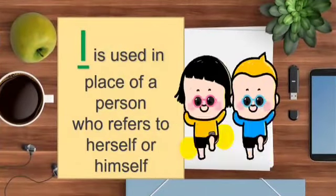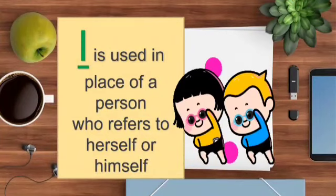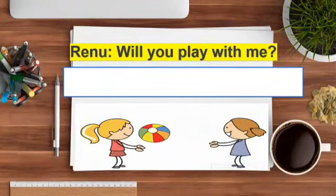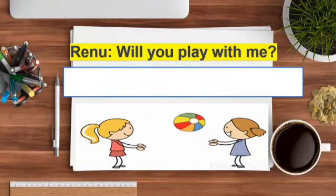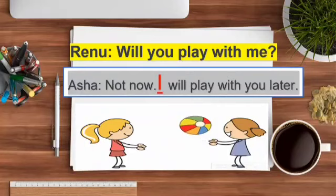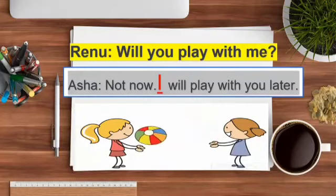Now, next is I. I is used in place of a person who referred to himself or herself. Children, when a person is talking about himself or herself, he or she will always use I. For example — Renu: Will you play with me? Asha: Not now. I will play with you later. So children, Asha used I for herself. So I is a pronoun.